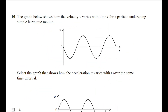For the second multiple choice question, you need to know your graphs for simple harmonic motion and understand the relationship between displacement, velocity, and acceleration for an oscillating object. I always like to picture a trolley between two springs, and think about where the velocity would be maximum, where the acceleration would be maximum, and so on.